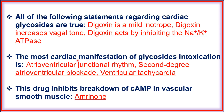The most common cardiac manifestations of cardiac glycoside intoxication (digoxin poisoning) are: atrio-ventricular junctional rhythm, second-degree atrio-ventricular blockade, and ventricular tachycardia.